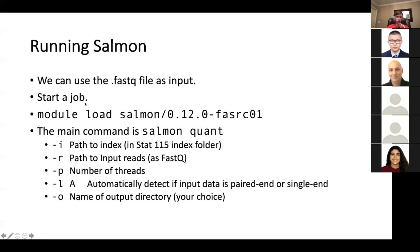But let's briefly go over how you'd run this. You can give it a FASTQ file as input. Start a job, so go to a compute node. Module load Salmon. And then the main command is salmon quant for quantification. The inputs you want to give it are the path to the index, which is in the stat 115 index folder. Next, you give it the path to the input reads which are the FASTQ files, number of threads. This will automatically detect if it's paired-end or single-end. I think these are single-end for this problem. And then dash O, so it's going to create an output directory. You just want to name that output directory whatever you want.